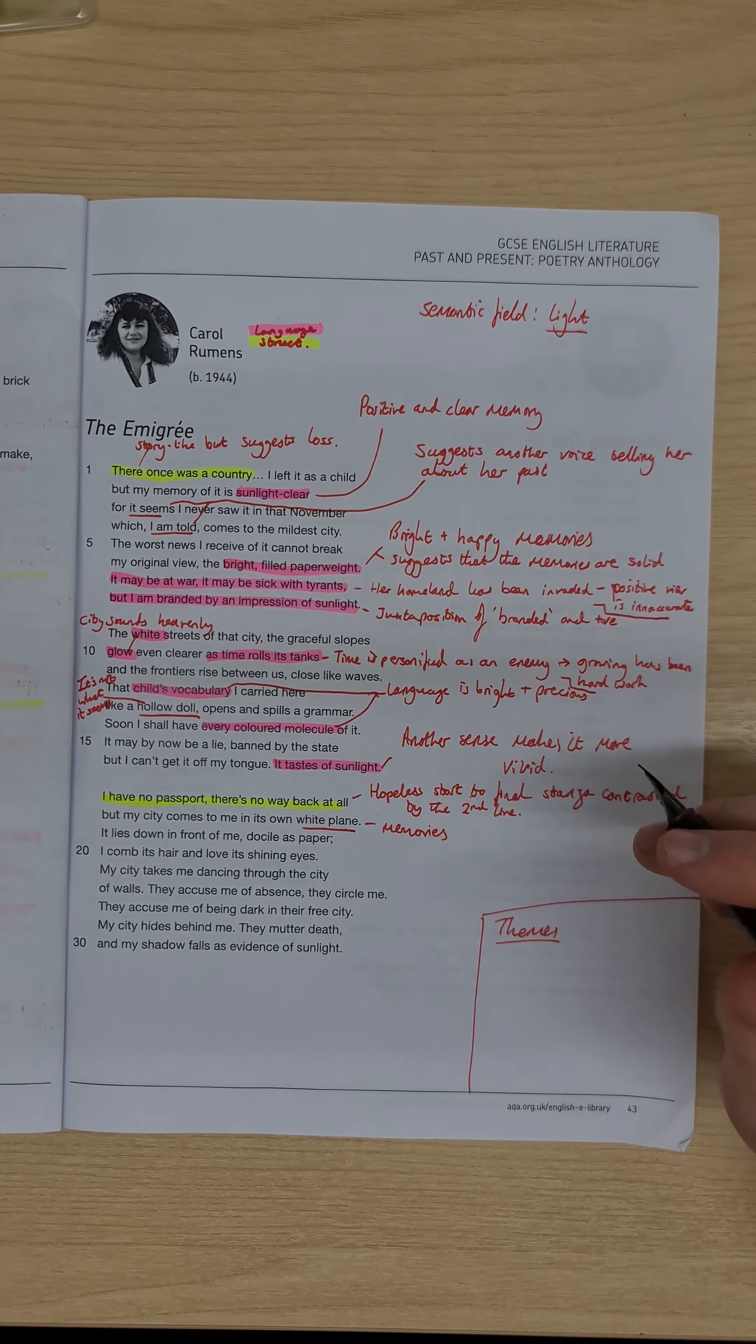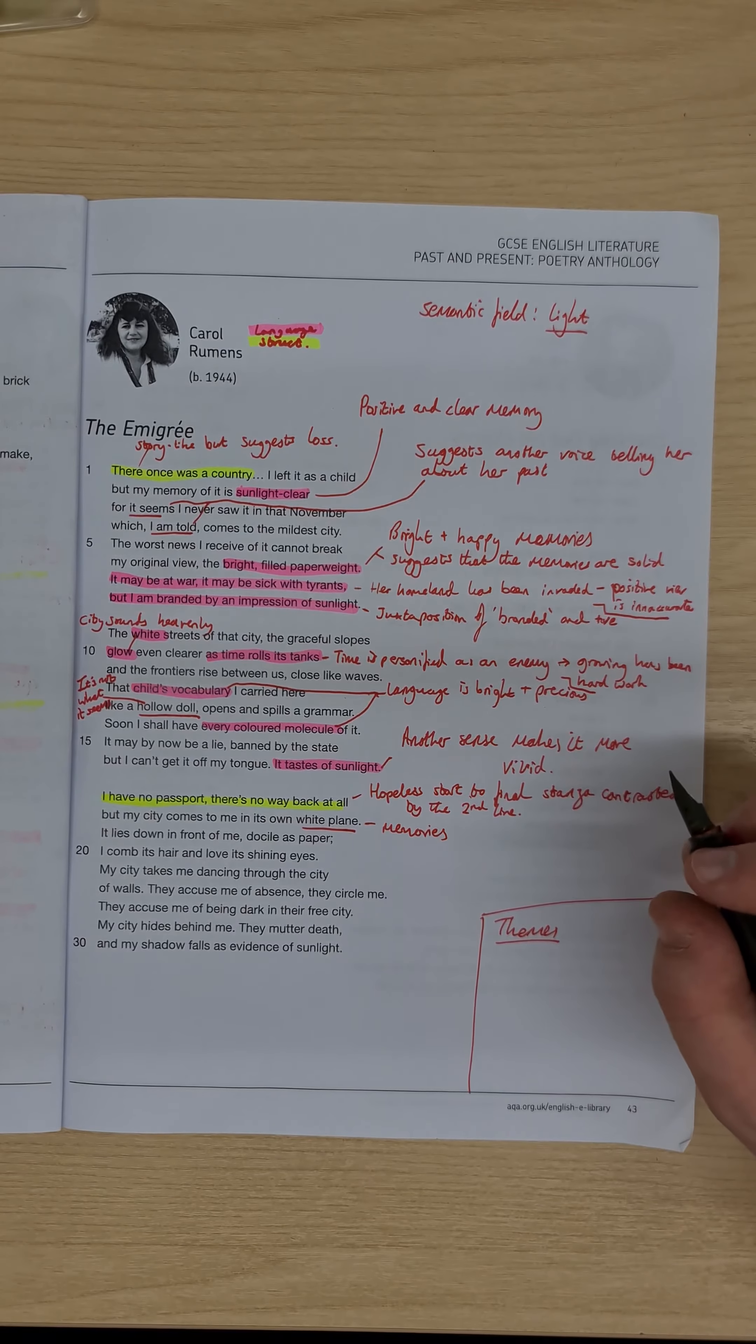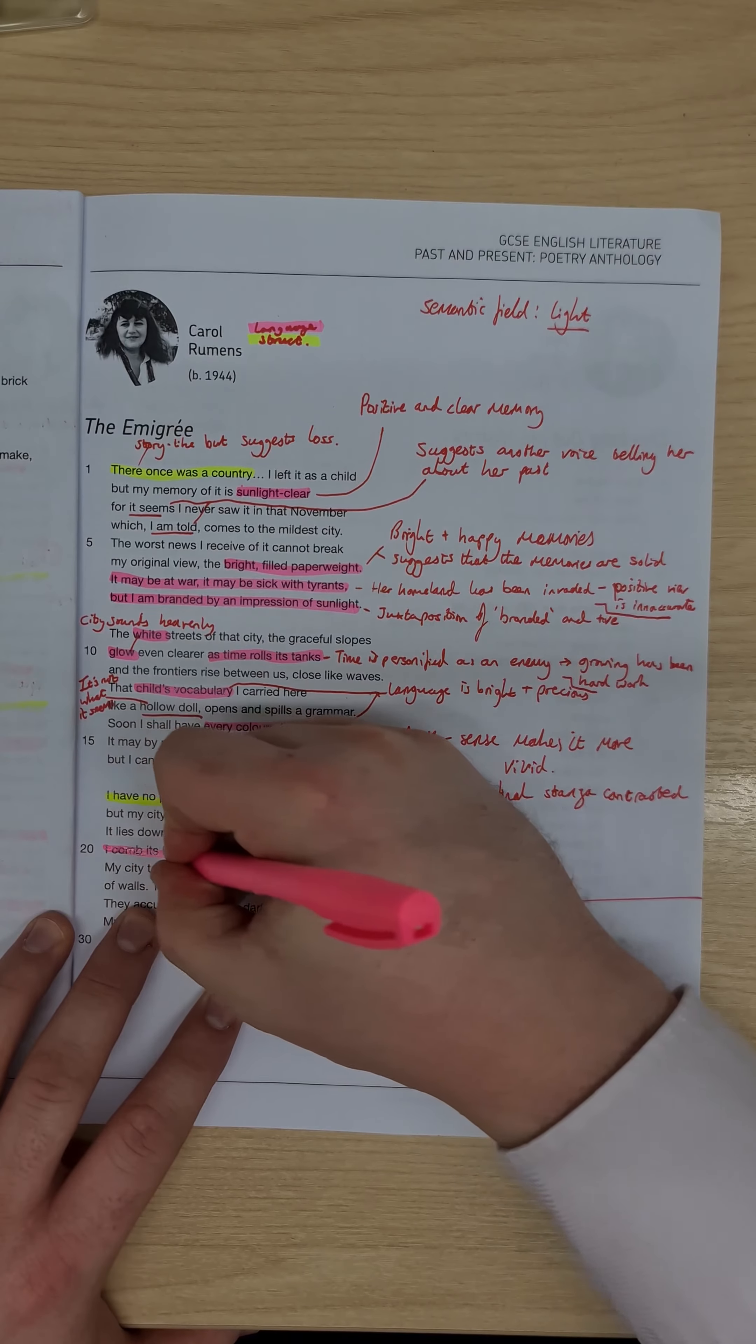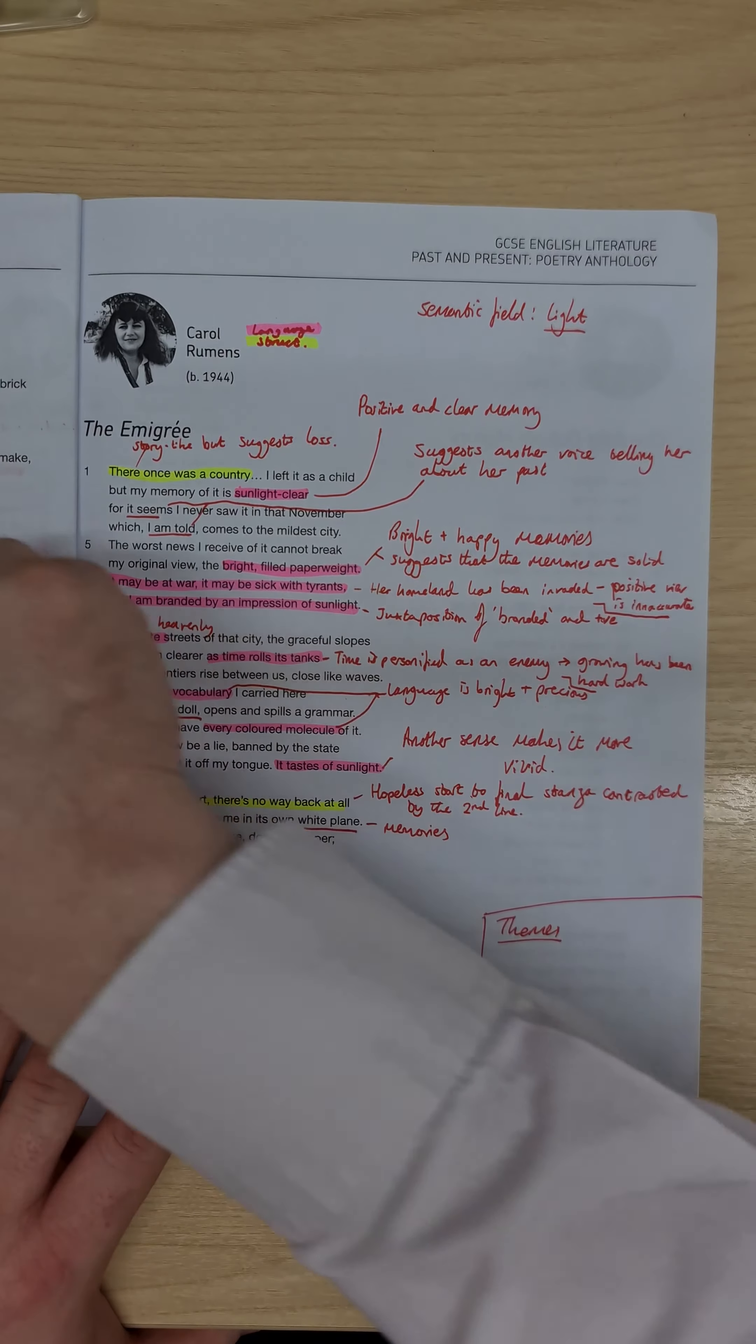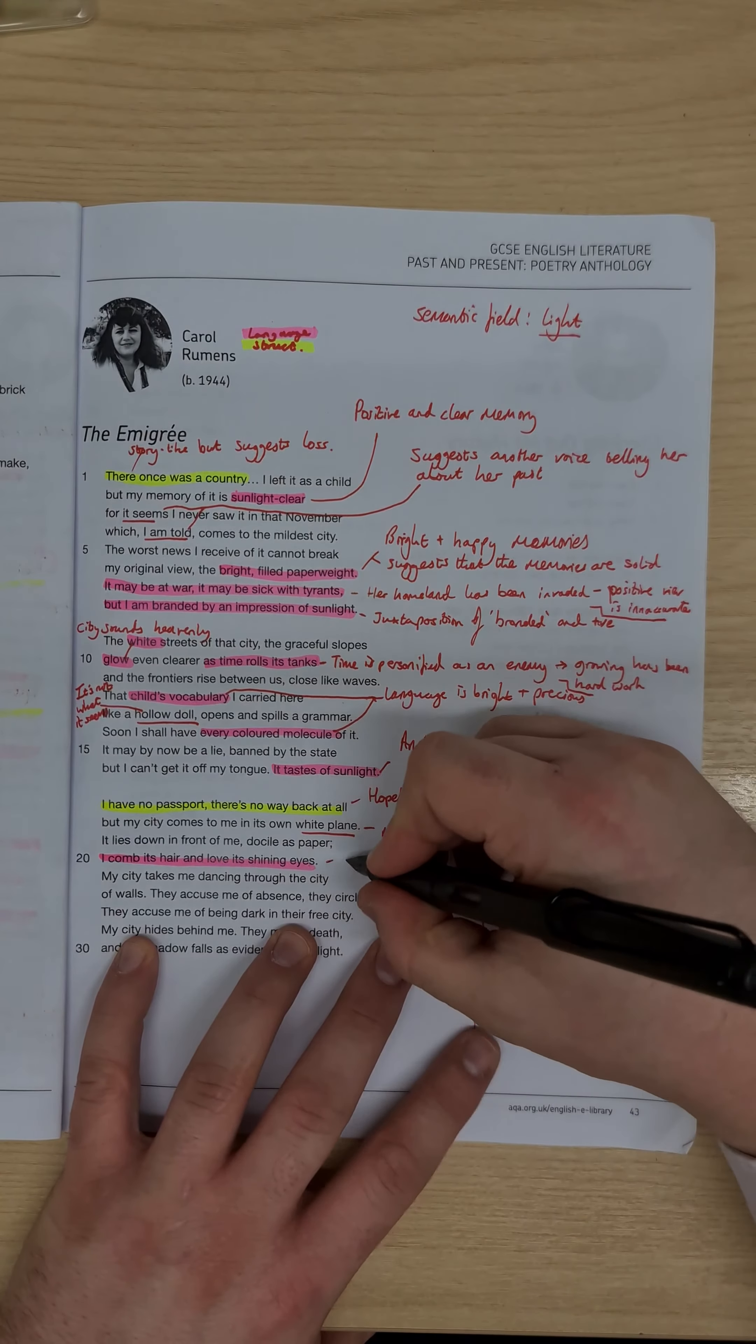it lies down in front of me, docile as paper, and I comb its hair, and love its shining eyes, and we have this childlike description here in the personification, in fact the personification's all through this section, where she's personifying her city, like a child playing with a pet,